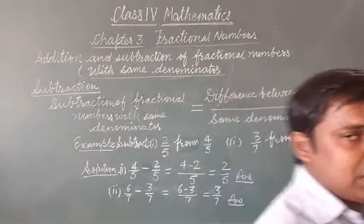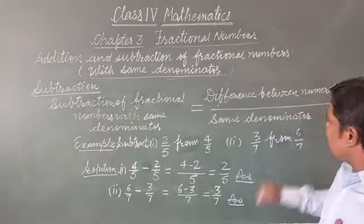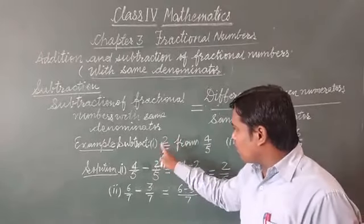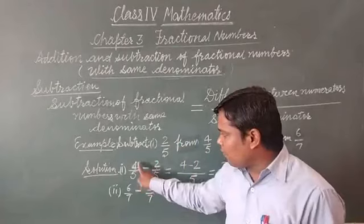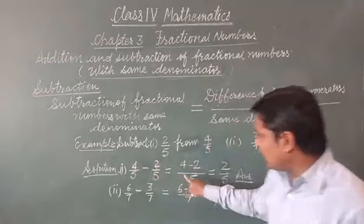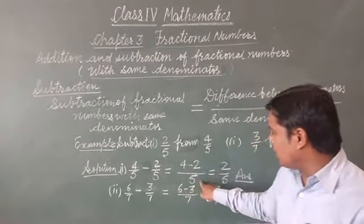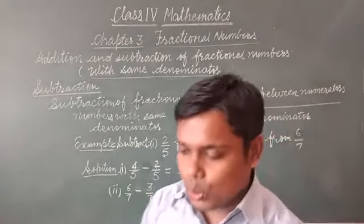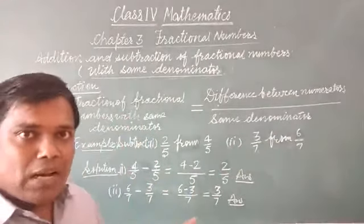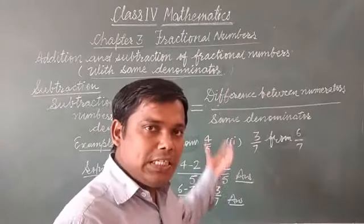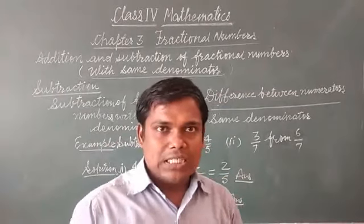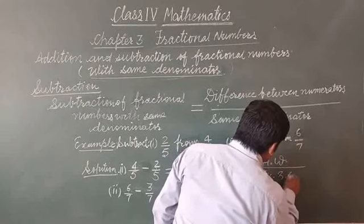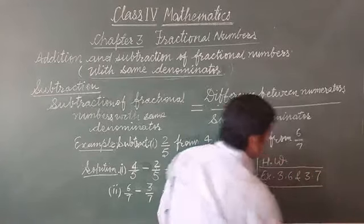If subtraction of two fractions with same denominator is given to you, you can find the difference between numerators divided by the same denominator. For example: 4 by 5 minus 2 by 5 gives 4 minus 2 by 5, which is 2 by 5. Similarly 6 by 7 minus 3 by 7 gives 3 by 7. I hope you understood how to subtract the given fractions having the same denominator. On behalf of this discussion, you will be able to do the questions of Exercise 3.7. So your homework is Exercise 3.6 and 3.7. Thank you.